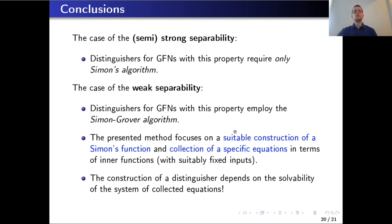To conclude this talk, we introduced the notion of separability, a property that can be observed for any generalized Feistel network. If we have strong or semi-strong separability, we can employ just Simon's algorithm to construct a quantum distinguisher. Otherwise, with weak separability, we employ the Simon-Grover combination, focusing on a suitable construction of the Simon's function — in our case a concatenation of two functions — and solving a suitable system of equations whose solvability is important for constructing the quantum distinguisher. Thank you for your attention.